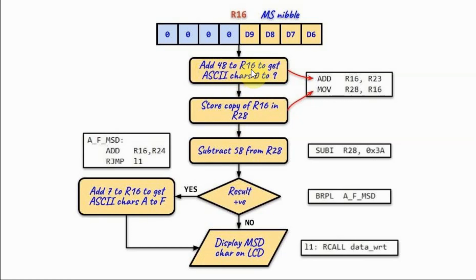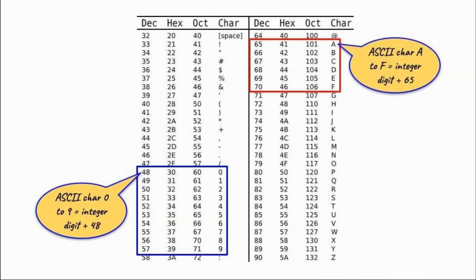We add 48 to R16 to get the ASCII value for characters from 0 to 9, since the LCD only accepts ASCII characters. Referring to the ASCII table, if the integer value is 5, we add 48 to get 53, giving the ASCII character '5'. To get the characters from A to F, we need to add 65 to the integer value.